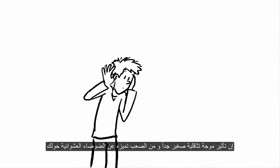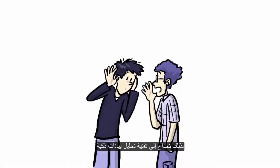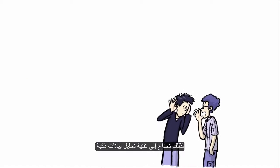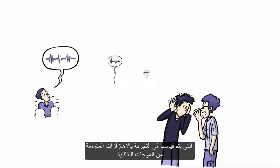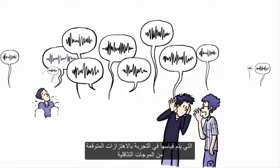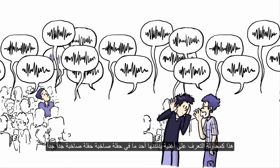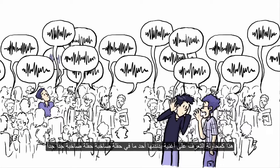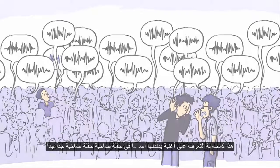The effect of a gravitational wave is so minuscule and easily confused with random noise, you need a smart data analysis technique. Scientists hope to identify the patterns of gravitational waves by comparing the wiggles they measure in the experiment to the wiggles they expect from the gravitational waves. That's like trying to identify a song being hummed at a very, very noisy party.